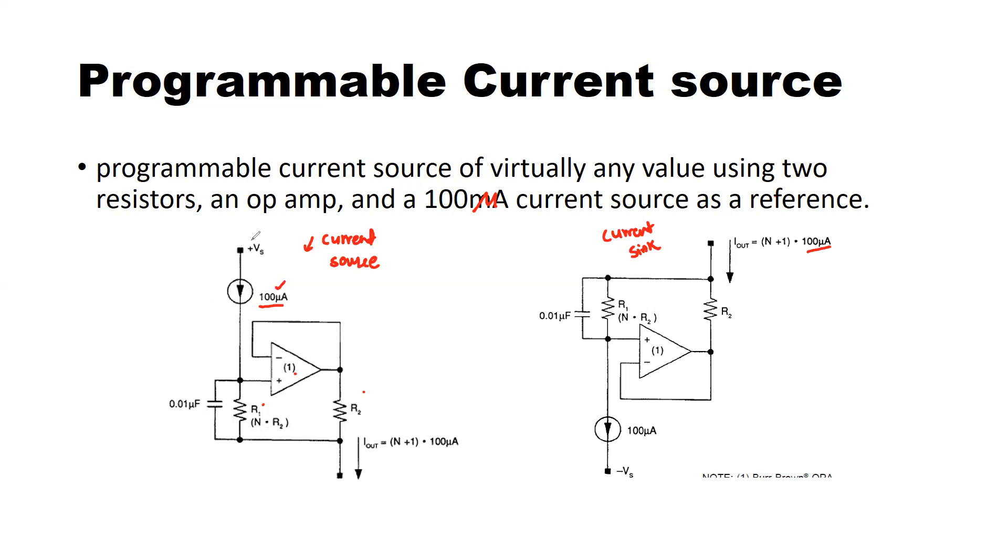Coming back to this section, we have used this voltage source from which we have put up this constant current source as a current reference. So basically we are using a current reference or current source to generate another current source.